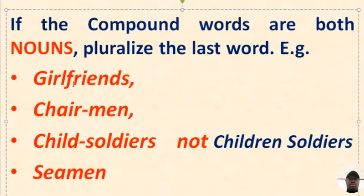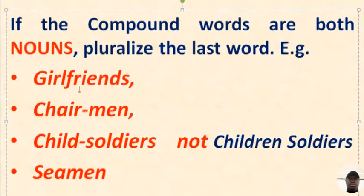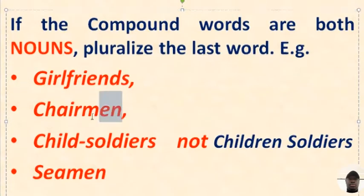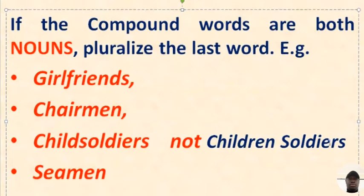You do not even need to put a hyphen there. What you need to do is just add an S to the last word — girl and friends, so girlfriends. Just add an S here. For chairman, just put the plural on the last word. For child soldiers — not children soldiers — child soldiers. Just add an S to the last word.